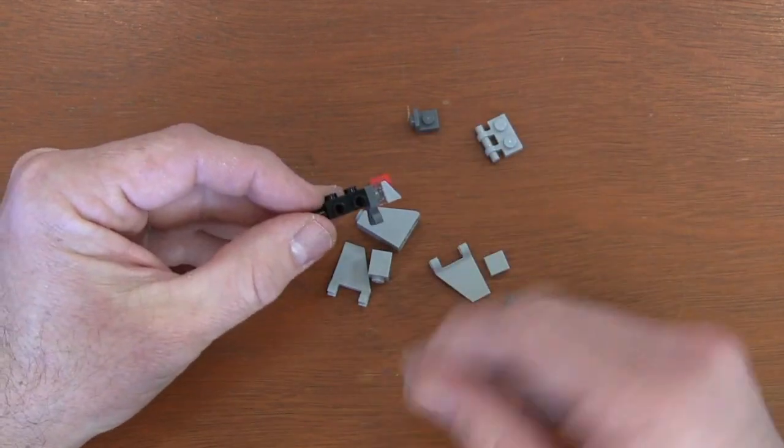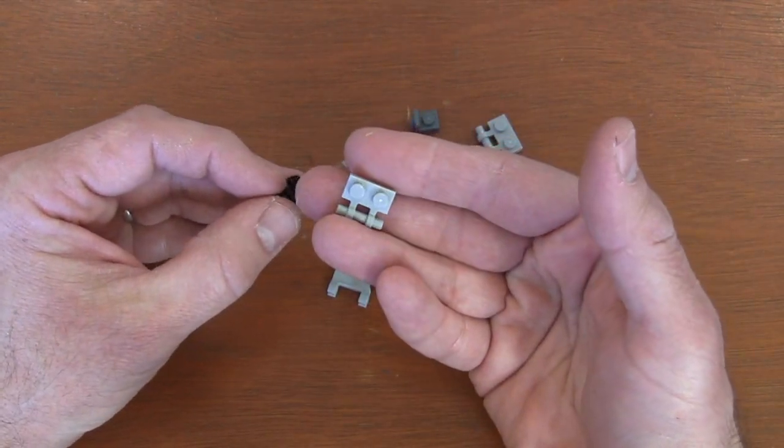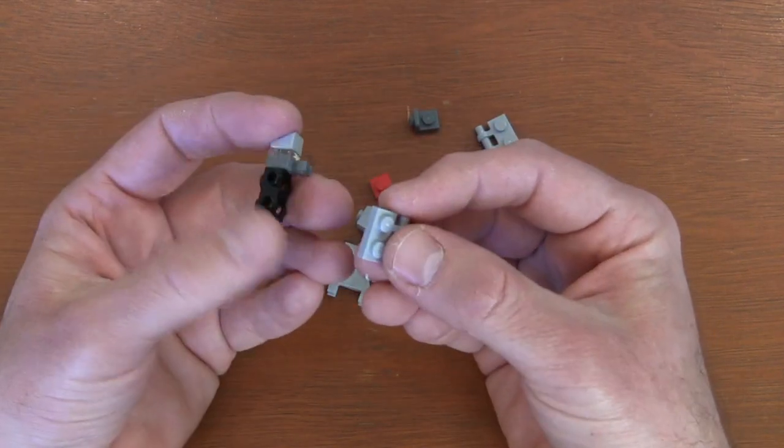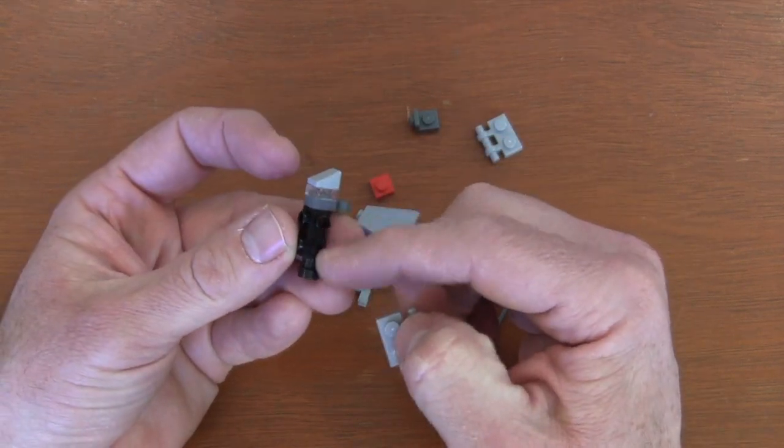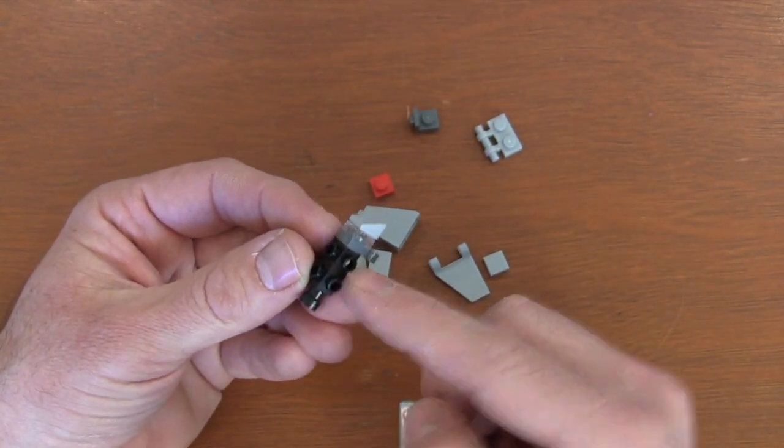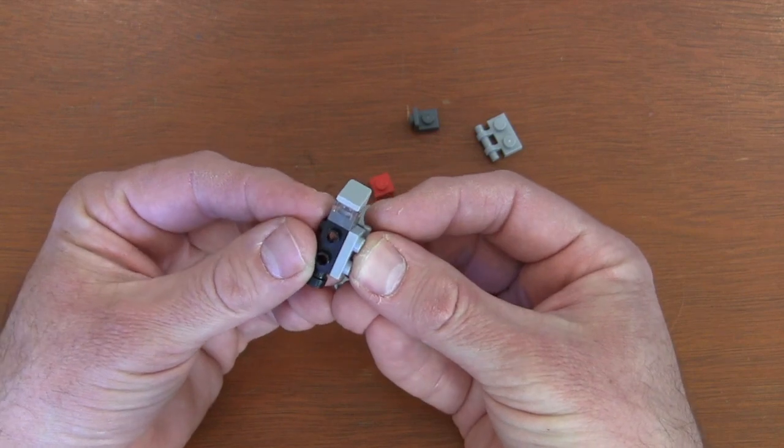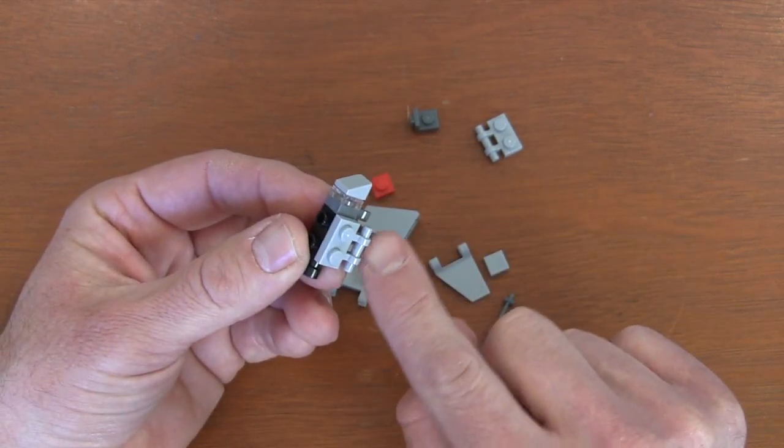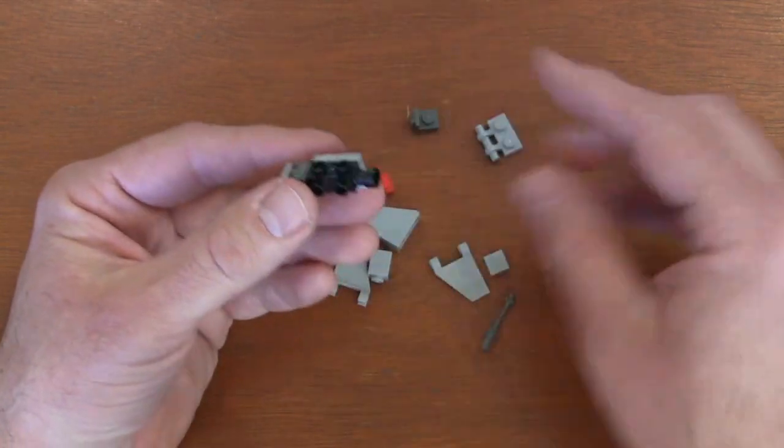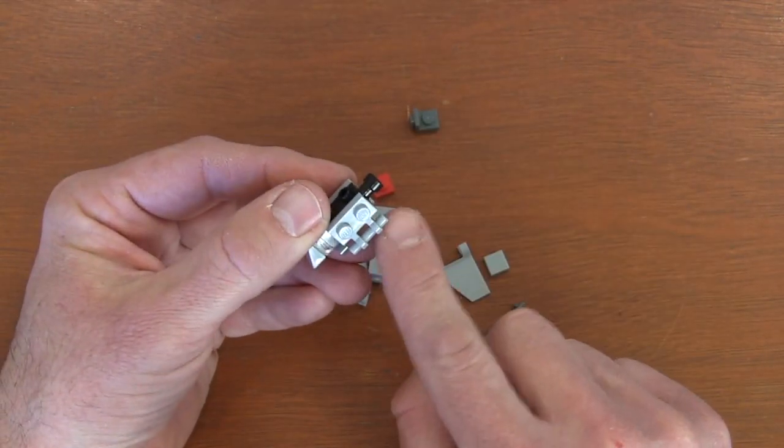To build the wings, I'm going to grab two of these 1x2 plates with open-end handles, and I'm going to put those plates along the side studs of my 1x2x2 third brick with side studs. I line it up so that the plates go across the stud and the handle is facing down. I do that to both sides, plates across the side studs and the handle is down.